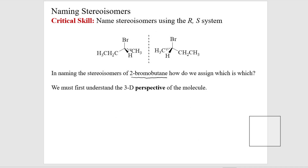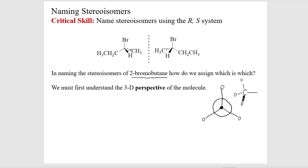If you think about the Newman projection, you were looking down a carbon bond. You couldn't see the bond in the back. When you had this perspective, you see three groups, with the fourth group of the tetrahedral carbon being directly behind — the eclipsing carbon. So when I look at the carbon down the 1-2 bond, I see the three circles for the Newman projection. This orientation is very similar to the perspective we're agreeing to use when looking at a stereocenter.